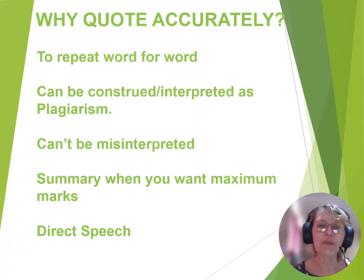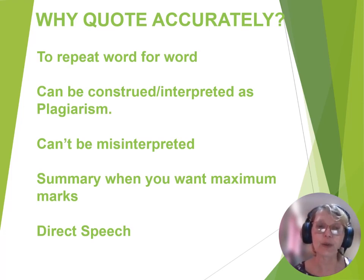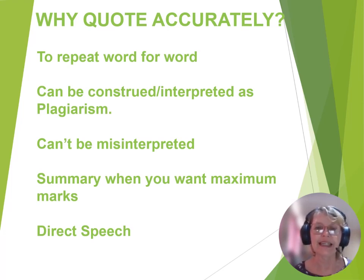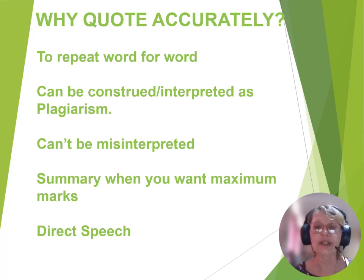Why do we want to quote accurately? We want to repeat word for word — we don't want to change it. Changing it can be construed or interpreted as plagiarism. Now plagiarism is a bad thing, but remember with the summary we allow a little bit of that to make sure you get at least seven marks. It cannot be misinterpreted if you quote accurately, and with direct speech we want to say exactly what the person has said. It's more accurate and it protects us, especially if we aren't very good at reported speech. Imagine you have to testify in a trial and you can't use reported speech correctly, but you know the words the person used and can state them accurately.